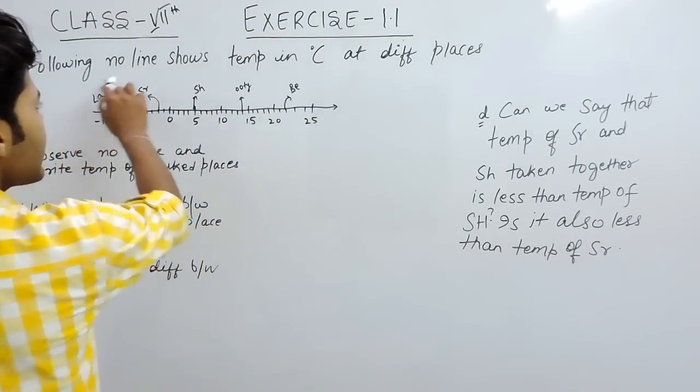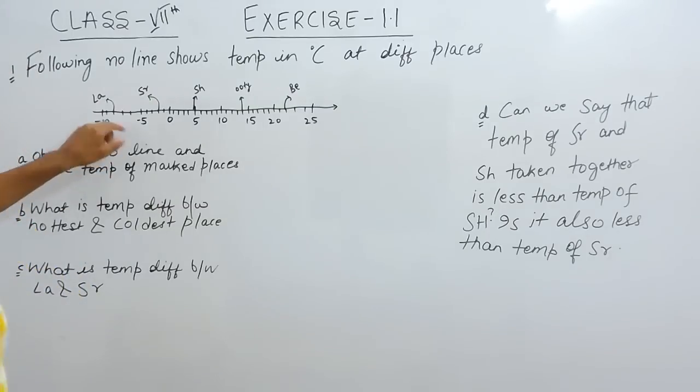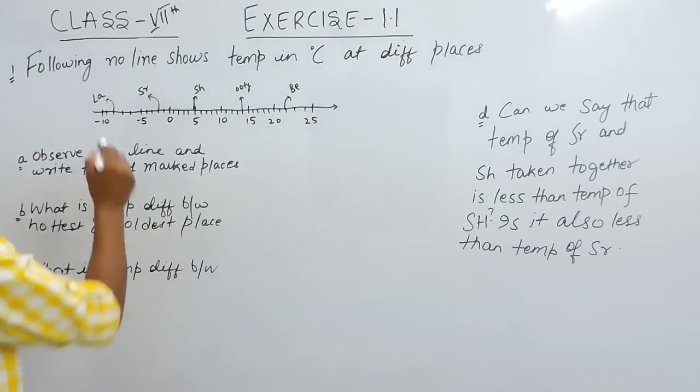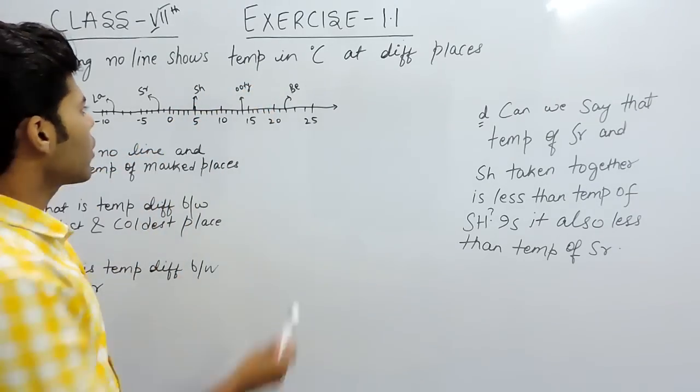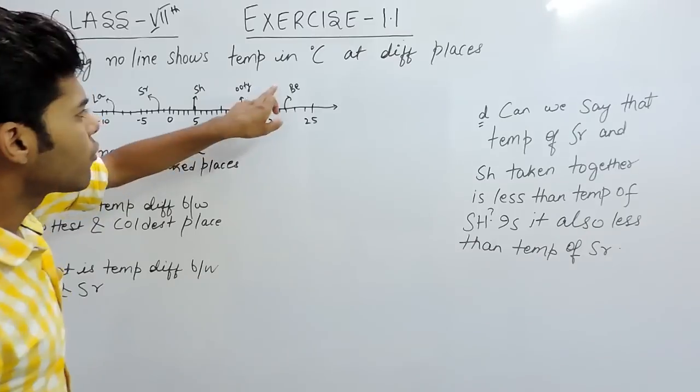So first of all we will analyze this number line. The places that have been given in your books I have noted with initials like LA, SR, SH, UT, and Bamburo for BE.